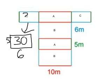Now I know that this face is 30 meters squared, and the matching shape on the other side is also going to be 30 meters squared.